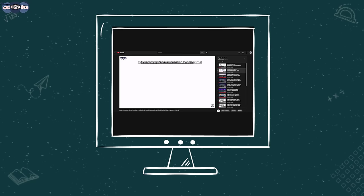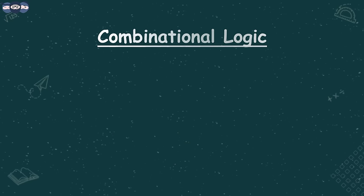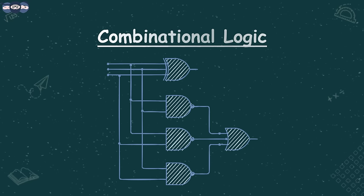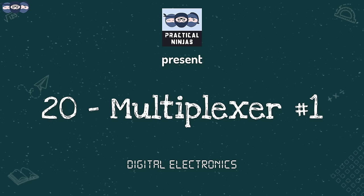We have already covered the basics of digital electronics in our previous videos. From this video, we will be starting to understand combinational logic. This uses advanced circuits and ICs. In this video, we will learn about a special device called a multiplexer.